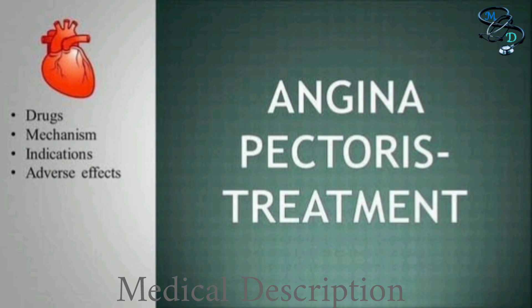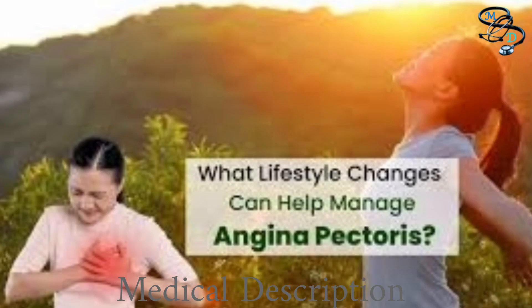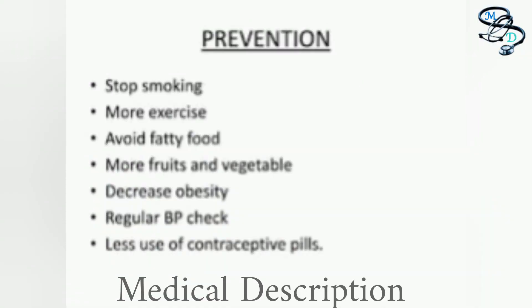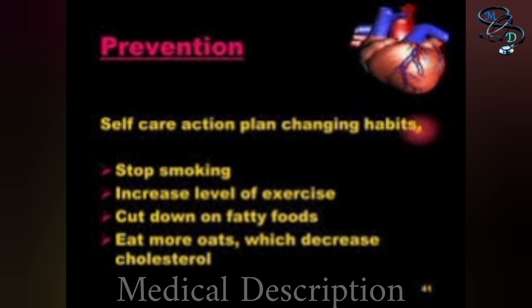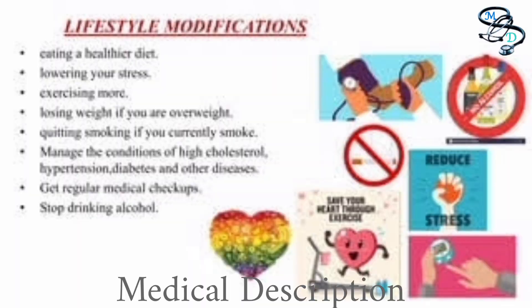Treatment of angina pectoris involves changes in lifestyle, surgery, and medication. One can typically predict discomfort when there is chest pain, and reducing physical exertion helps control it. Lifestyle adjustments may involve regular exercise and following a healthy diet of vegetables and whole grains, which can reduce the risk of chronic diseases like high cholesterol, hypertension, and diabetes.